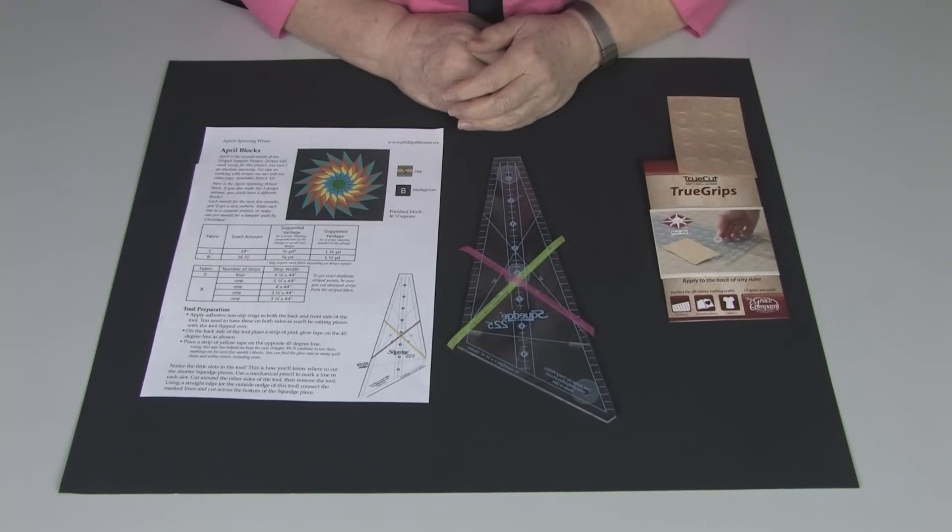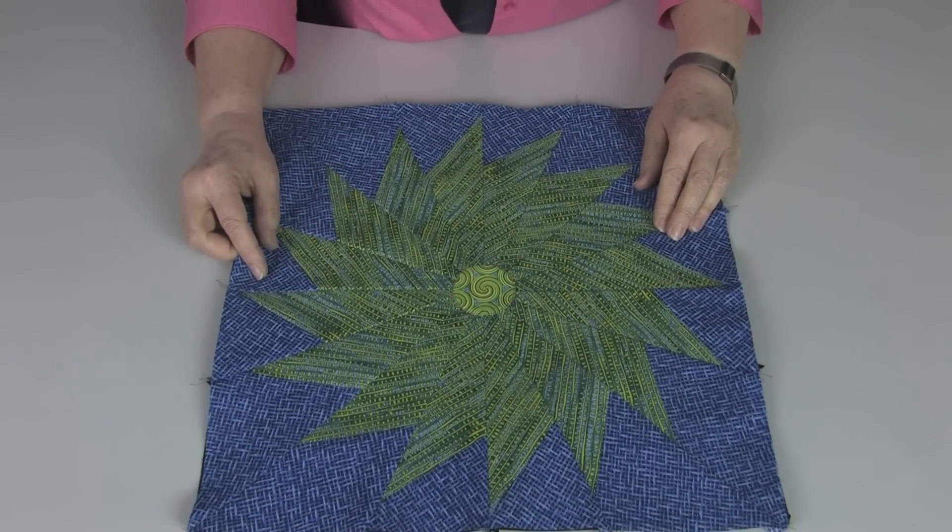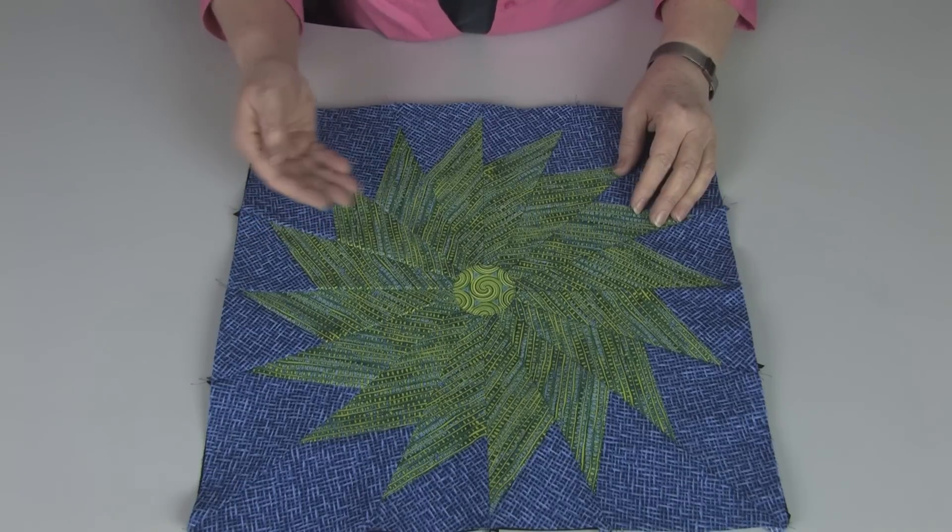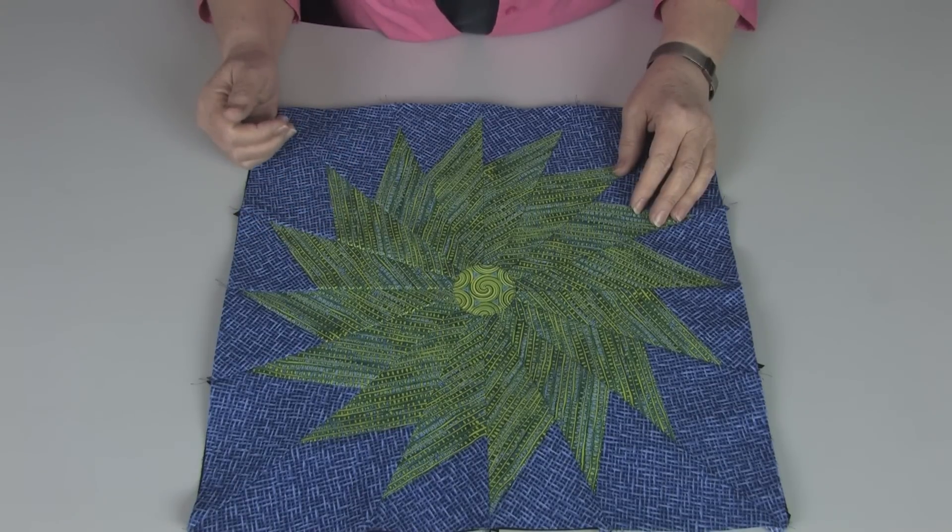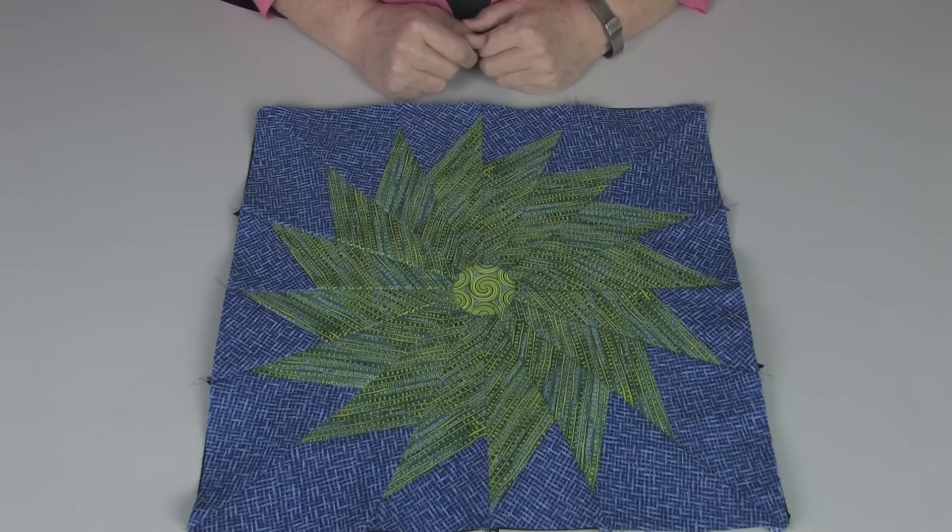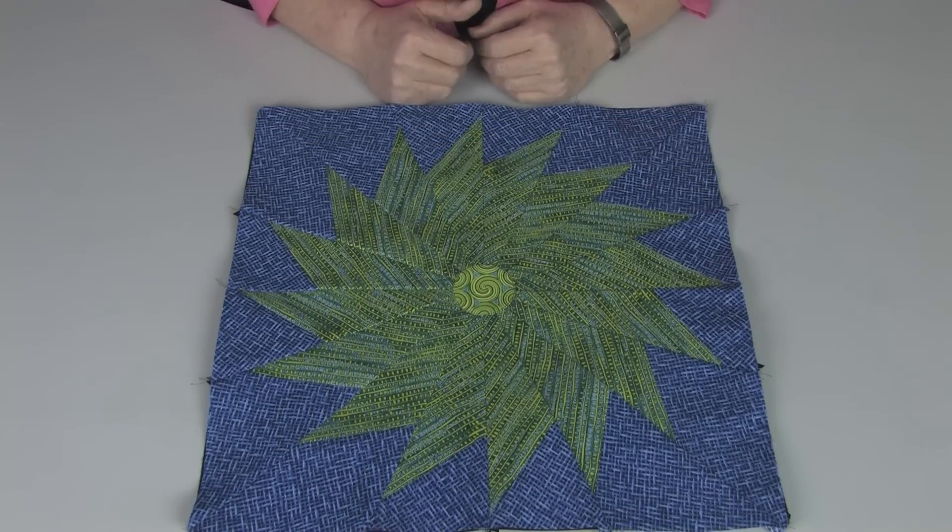Next, we'll be talking about your choice of fabric. This is the first block I made for April's block. And I was a little disappointed. It just didn't do what I expected. I love the green, I love the background. But when I put it together, it just made a great big green blob. I might be able to fix this with some quilting. But let's look at why it didn't work.